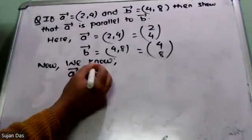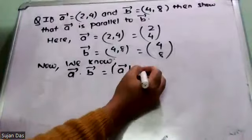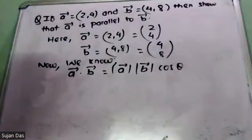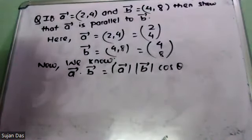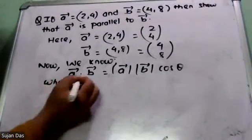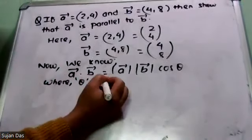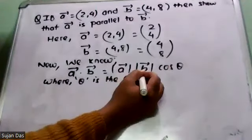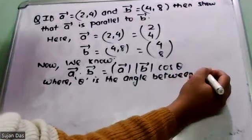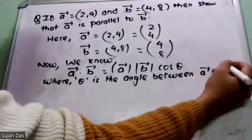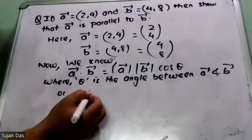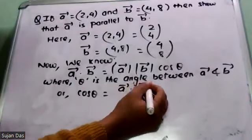Vector A dot vector B equals the magnitude of vector A times the magnitude of vector B times cos theta. Rearranging, cos theta equals vector A dot vector B divided by the magnitude of vector A times the magnitude of vector B.